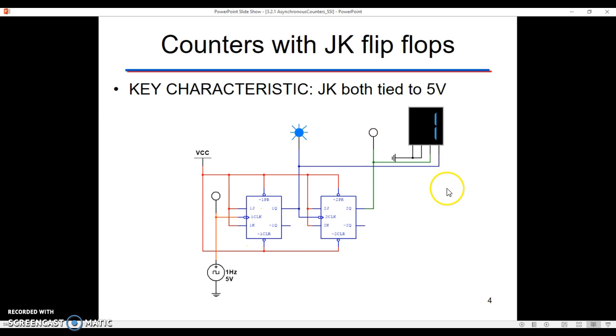Toggle mode, again, happens when J and K are both tied high. So in this case, 5 volts. This one is tied to 5 volts. This is the divide-by-two. This is another divide-by-two.